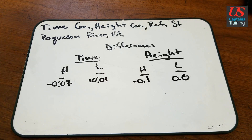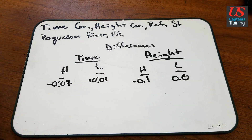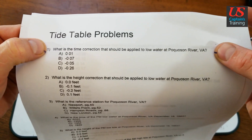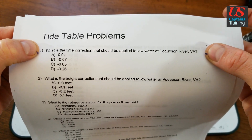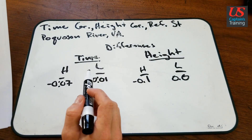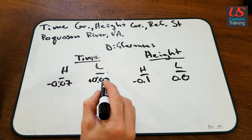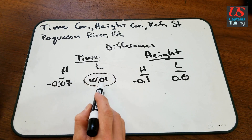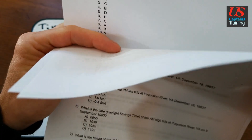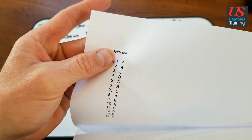Now we have the proper information and we can solve these. Let's bring the problems back. Problem 1 says, what is the time correction that should be applied to low water at Pocosin River? Time correction, low water: plus 1 minute. That is the answer — A is 1 minute.